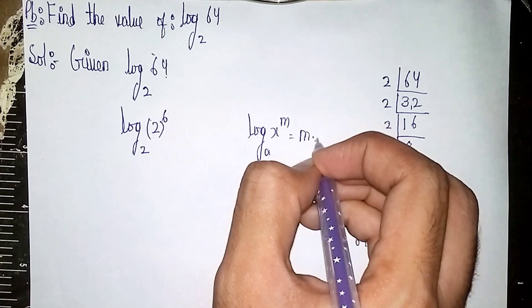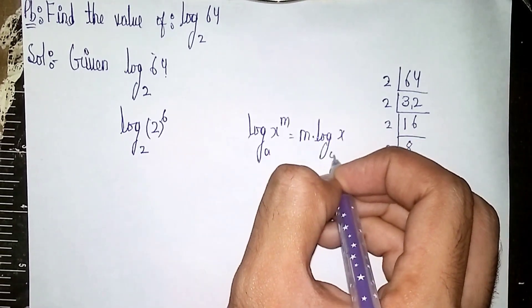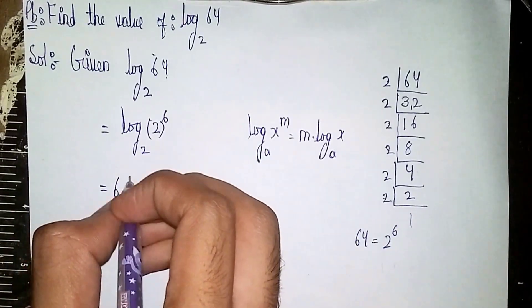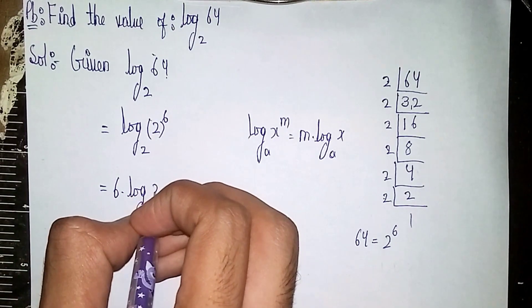So it becomes here 6 times log 2 to the base 2. Always highlight the formula.